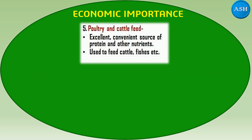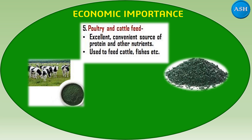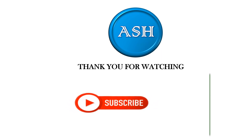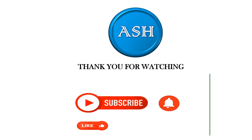The fifth economic importance is that Spirulina is used as poultry and cattle feed. It is an excellent and convenient source of protein and many other nutrients, serving as a balanced diet, and can be used as feed for cattle, fishes, etc. This covers all the topics on Spirulina. Thank you for watching. If you like our video, please subscribe, like, share, and comment.